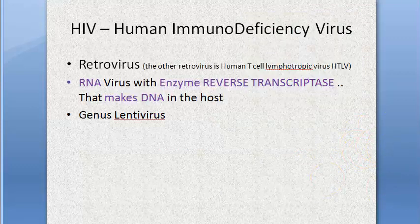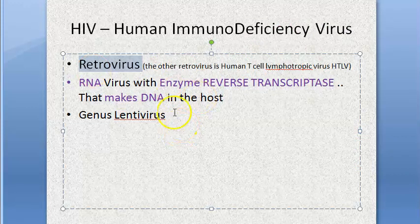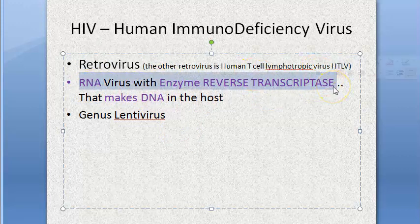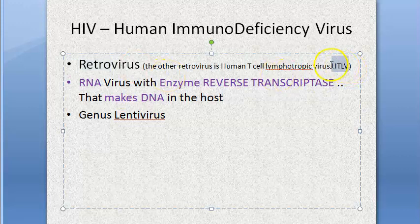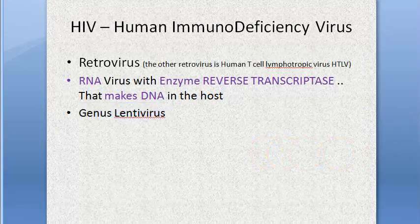HIV is an RNA virus with the enzyme reverse transcriptase, so it is a retrovirus. It goes in reverse: the RNA becomes DNA in the host cell, that DNA integrates with our DNA, and through replication, transcription, and translation, viral proteins are synthesized. HIV is not the only retrovirus — HTLV (human T-cell lymphotrophic virus) is also a retrovirus. The genus is lentivirus.